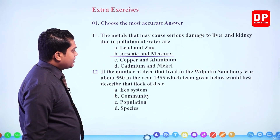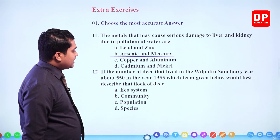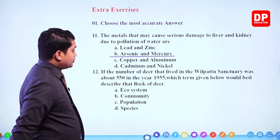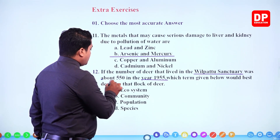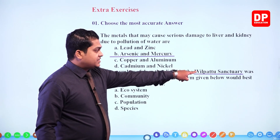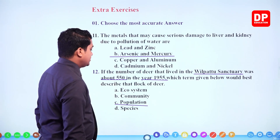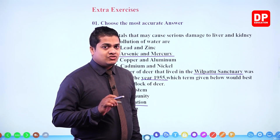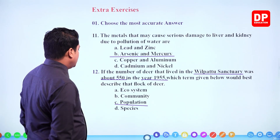Next: if the number of deer that lived in the Vilpattu sanctuary was about 550 in the year 1955, which term would best describe that flock? They mention a specific location, a specific time period, and a count. This reflects a population — within a certain location and a given time period, the number of similar species living within that area. So the answer is population.